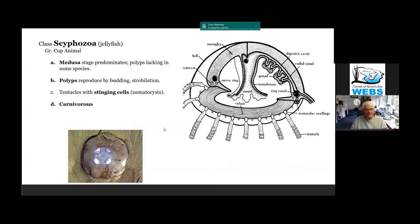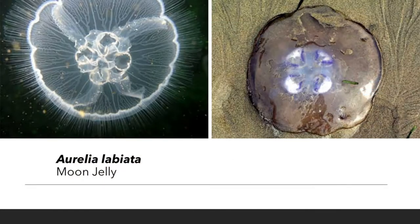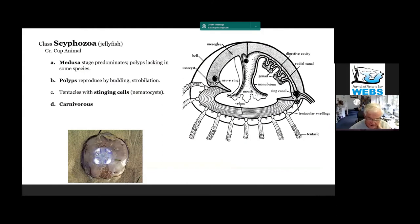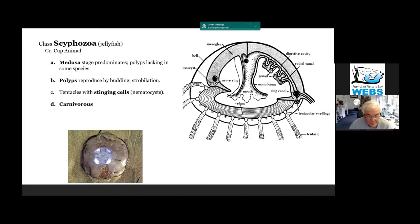The jellyfish: Scyphozoa, which means 'cup animal.' You're probably familiar with this one — many of you have seen it on the beach. It's sometimes up to a foot across. This is the moon jelly, washed up on shore. We get them every so often, several times a year. These bright purple and white things in the middle are the gonads. In Scyphozoa, it's the medusa stage — the jellyfish stage — that is predominant. There are polyps in some species but not all; the moon jelly does have a polyp stage. They reproduce by budding or strobilization.